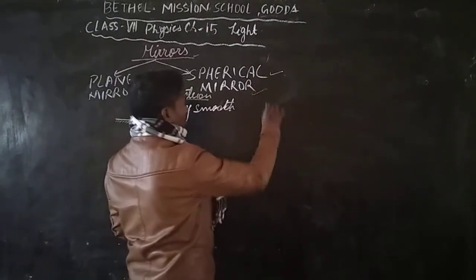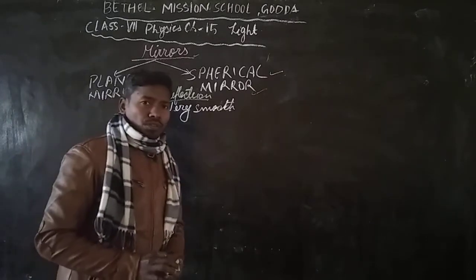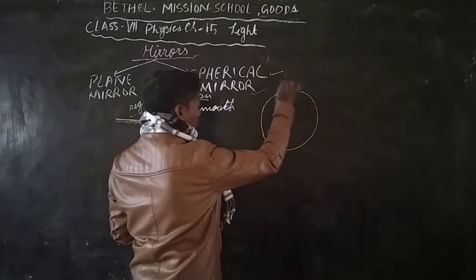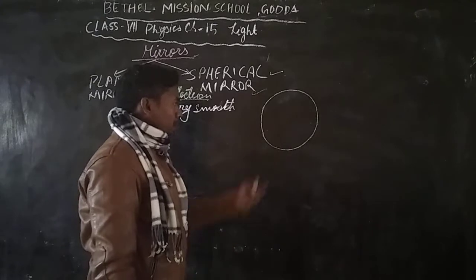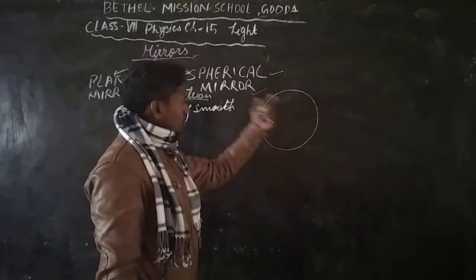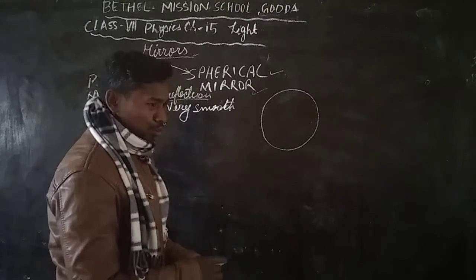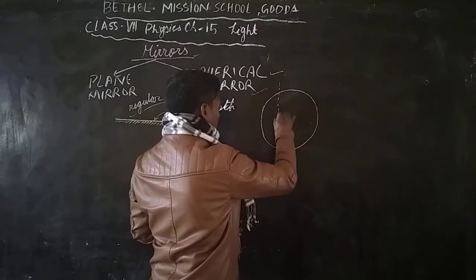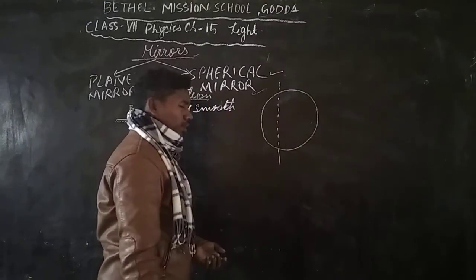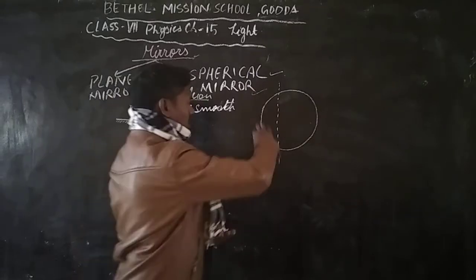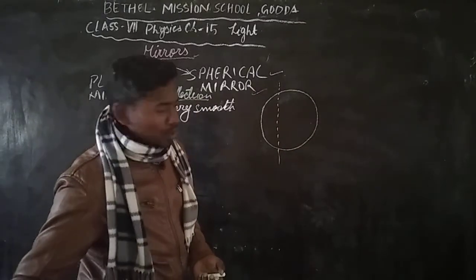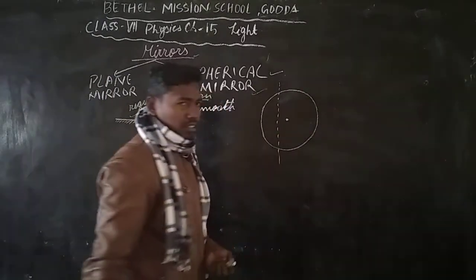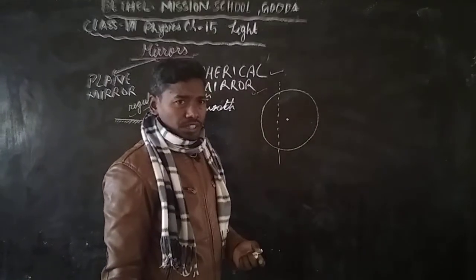Now we can talk about spherical mirrors. First, let us imagine a sphere. I have drawn a sphere and what we do is we cut this sphere to get a portion. This sphere has a geometric center. If I ask what is the center of this curve, it is the center of curvature.